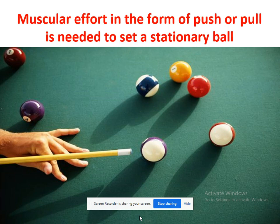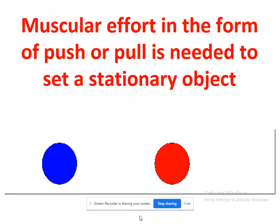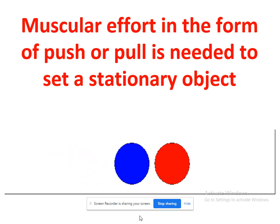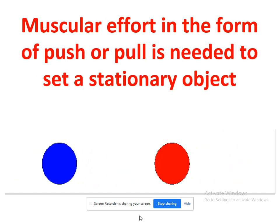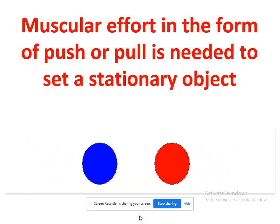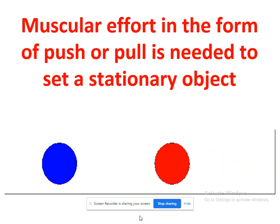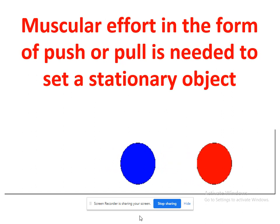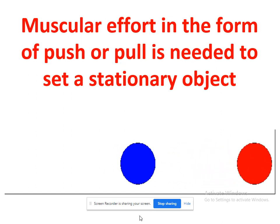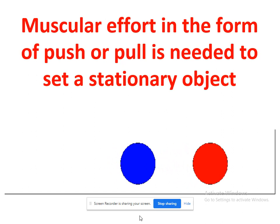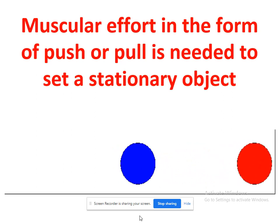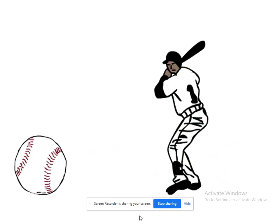In day-to-day life you can observe many phenomena due to the application of force. In this activity, the red ball is initially at rest. When the blue ball comes and hits it, the red ball also moves — it continues in a state of motion. This is the effect of force on the red ball by the blue ball — the muscular effect in the form of a push. So you can conclude that force can set bodies at rest into motion.